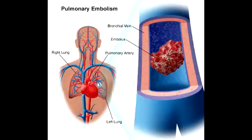Where do 95% of all pulmonary emboli arise from? 95% of pulmonary emboli arise from deep leg veins, causing deep vein thrombosis. This can commonly occur if a person has long-term immobility of their legs.